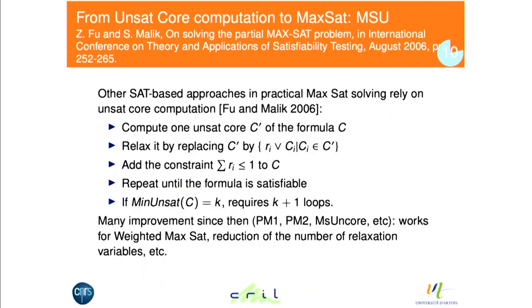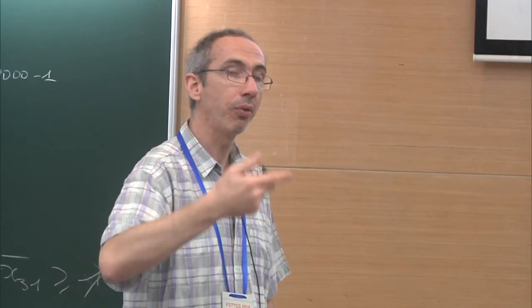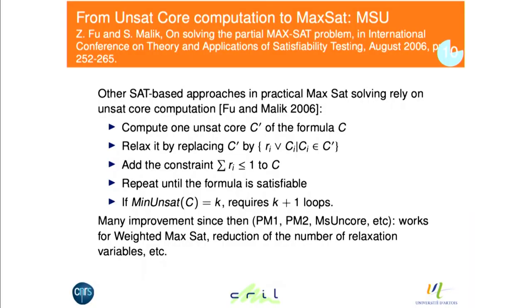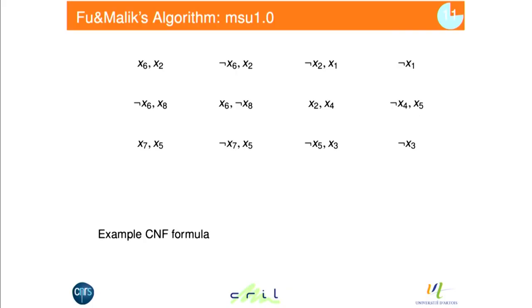What is very nice is: if you know the value k — how many constraints you need to falsify — you know you will require exactly k+1 calls to the SAT solver. With linear search, you might get only two calls but could also require a huge number. Here there is a guarantee of exactly k+1 calls if you know your answer is k.